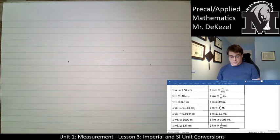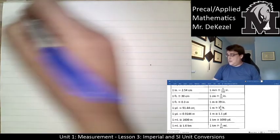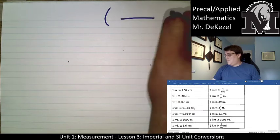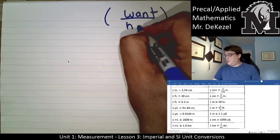The conversions or the steps that we take are very similar to what we learned in Lesson 1. It's always what we want, the unit that we want on the top, and the unit that we have goes on the bottom.